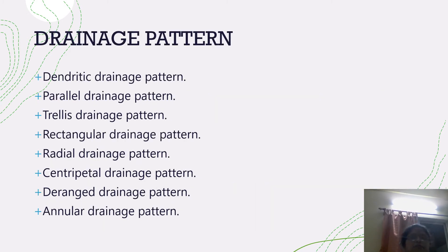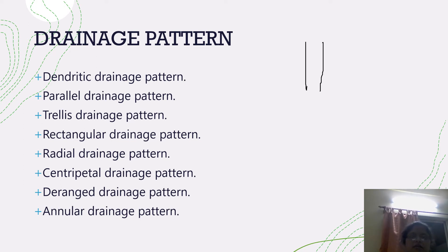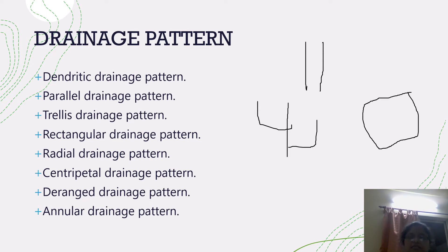Drainage patterns can be divided into different types — this includes the parallel pattern, rectangular pattern, and the radial drainage pattern. These different shapes represent different drainage patterns.